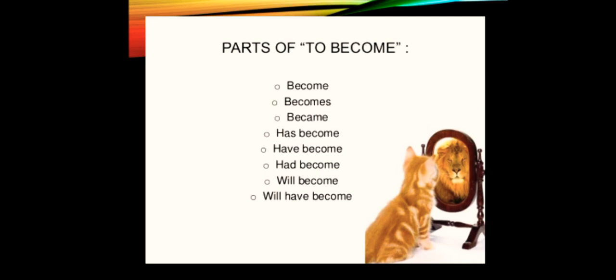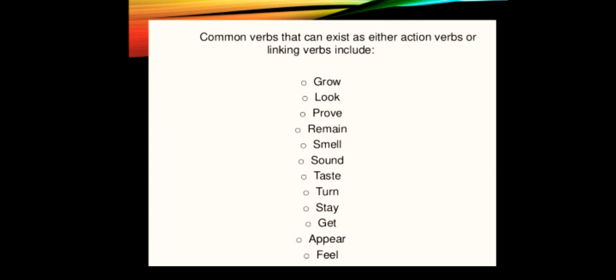Then we have some verbs jo ke action verb ka kaam bhi karte hain aur linking verb ka bhi. This is the complete list: grow, look, prove, remain, smell, sound, taste, turn, stay, get, appear, feel. These do the work of main verb as well as linking verb.